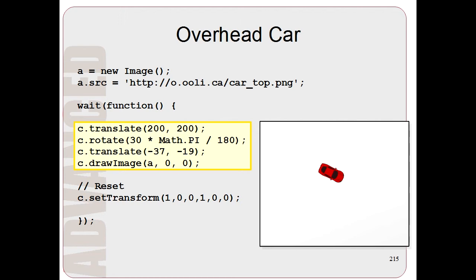Well, here's the code for doing it. So as you can see, down here we draw the car. And here are the transformations we have to do to get the car to be in the position where we want it to be.